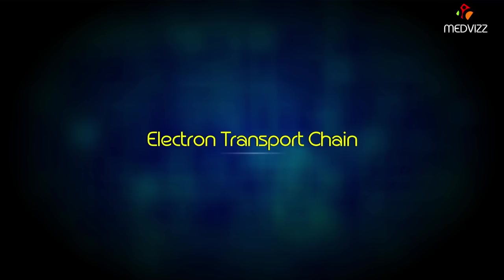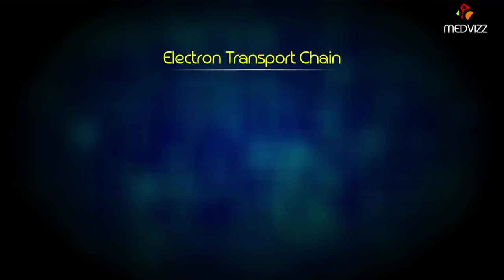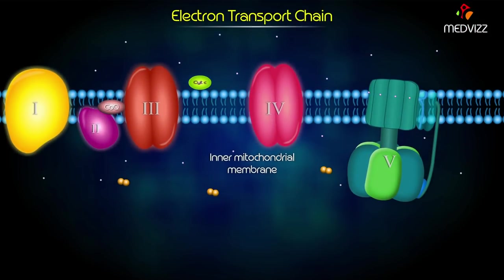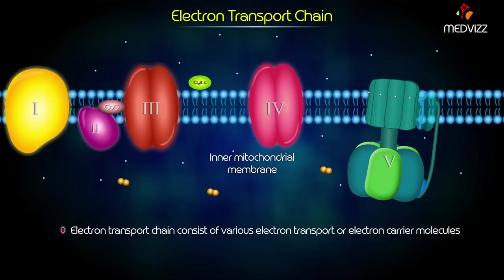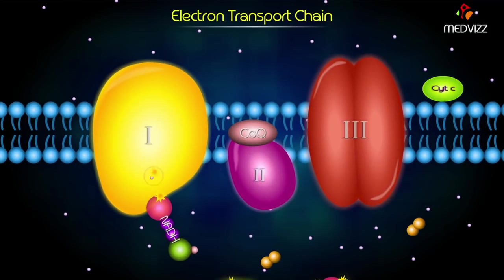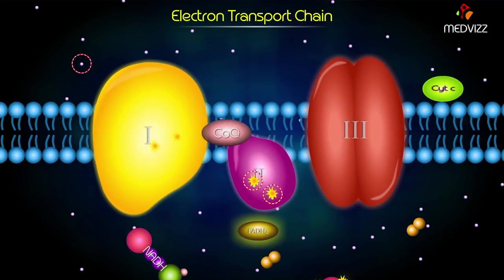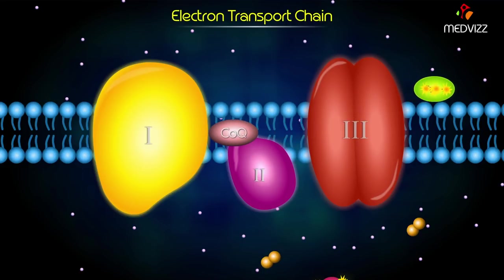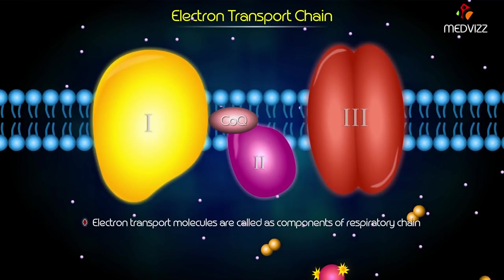The electron transport chain, or respiratory chain, is present in the inner mitochondrial membrane. It consists of various electron transport or electron carrier molecules arranged in a sequence. They carry or transfer electrons from reduced coenzymes like NADH and FADH2 to the final electron acceptor. The electron transport molecules are known as components of the respiratory chain.